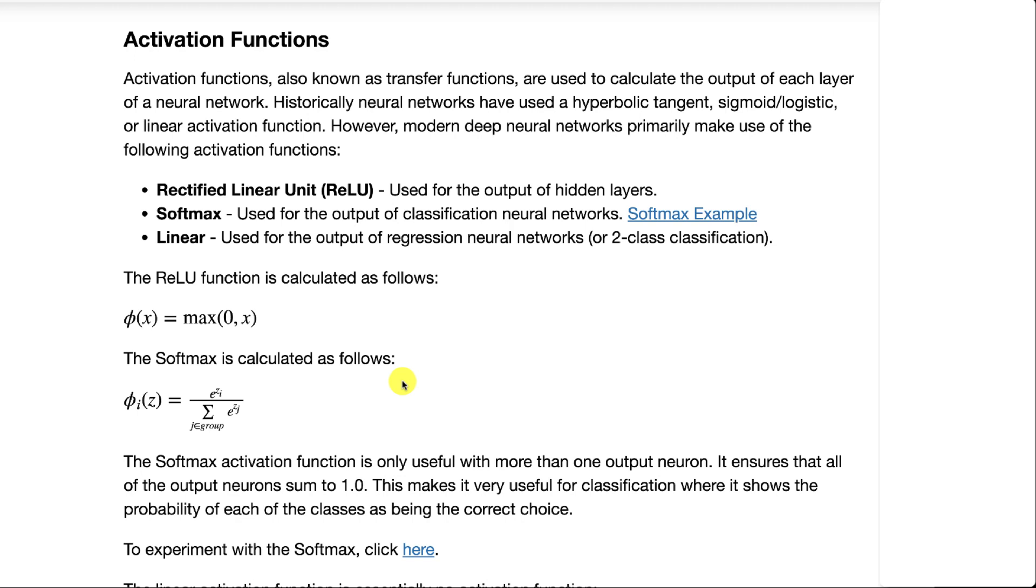Softmax is always used in classification neural networks for the final output of the neural network.